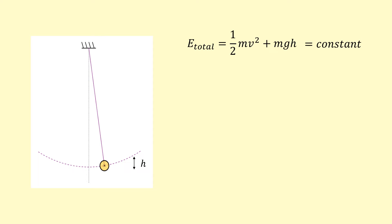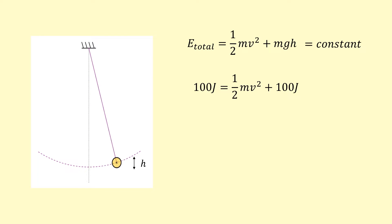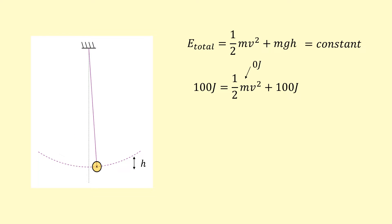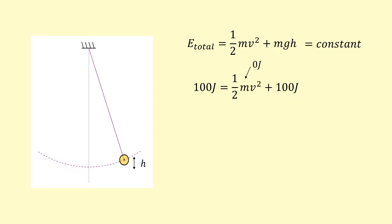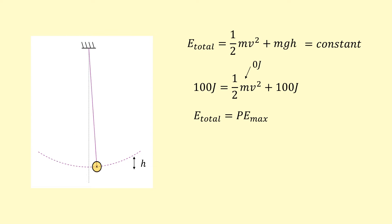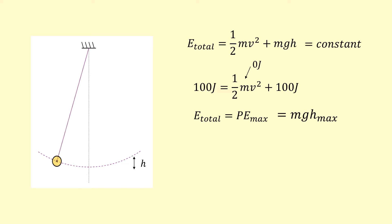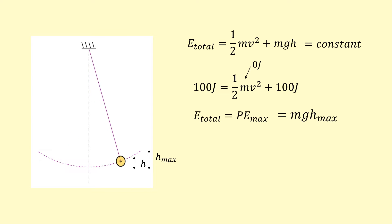In another example, if the total energy is 100 joules and the gravitational potential energy is also 100 joules, then the kinetic energy must be zero. This is when the pendulum is at its maximum height and has stopped moving. So we can also determine the total energy by finding the maximum potential energy, written as mgh_max, where h_max is the highest point the pendulum can reach.